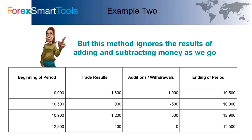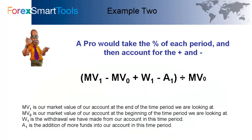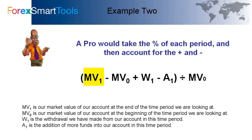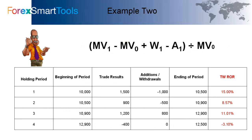How would a pro approach this? This is a method we've learned from the NFA — the National Futures Association — as we became CTAs. A pro would take the percentage of each holding period, account for the additions and subtractions along the way, and figure that percent for each period separately. The formula takes your market value at the end of the time, subtracts the market value at the beginning, adds back any withdrawals, and subtracts any additions. Then you divide that whole figure by what your account started with at the beginning of that particular holding period.